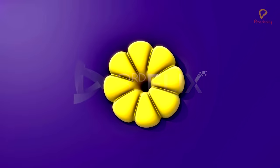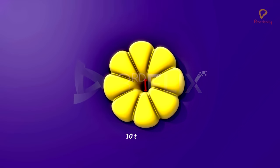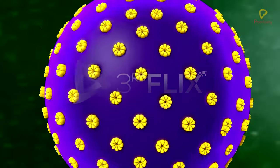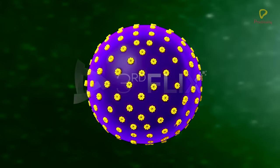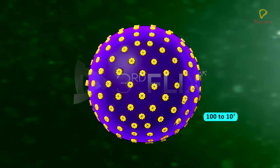Nuclear pores are circular in shape with a diameter of 10 to 100 nanometers. The total number of pores in the nuclear envelope may vary from 100 to 10 to the power of 7.